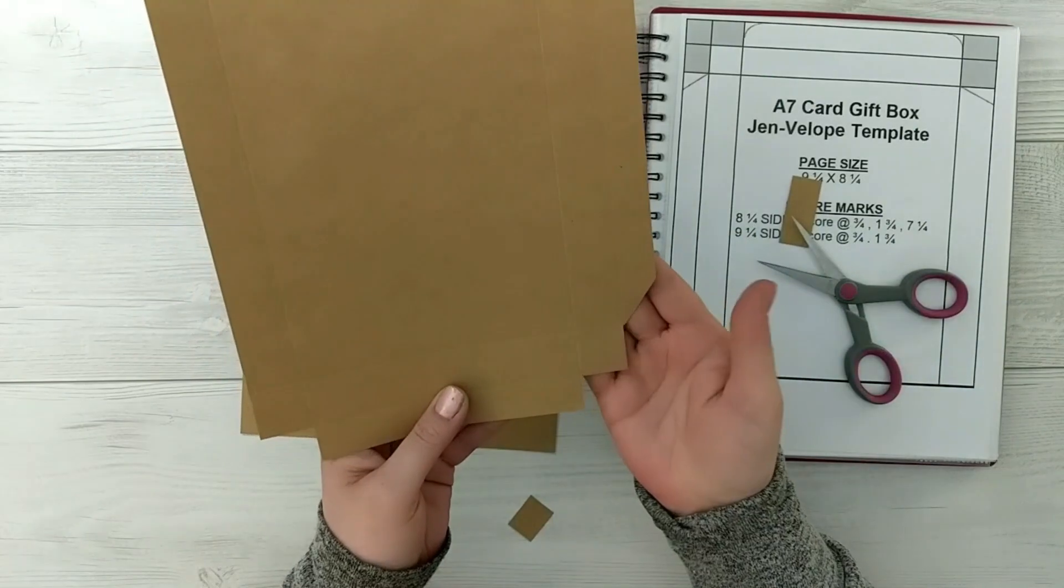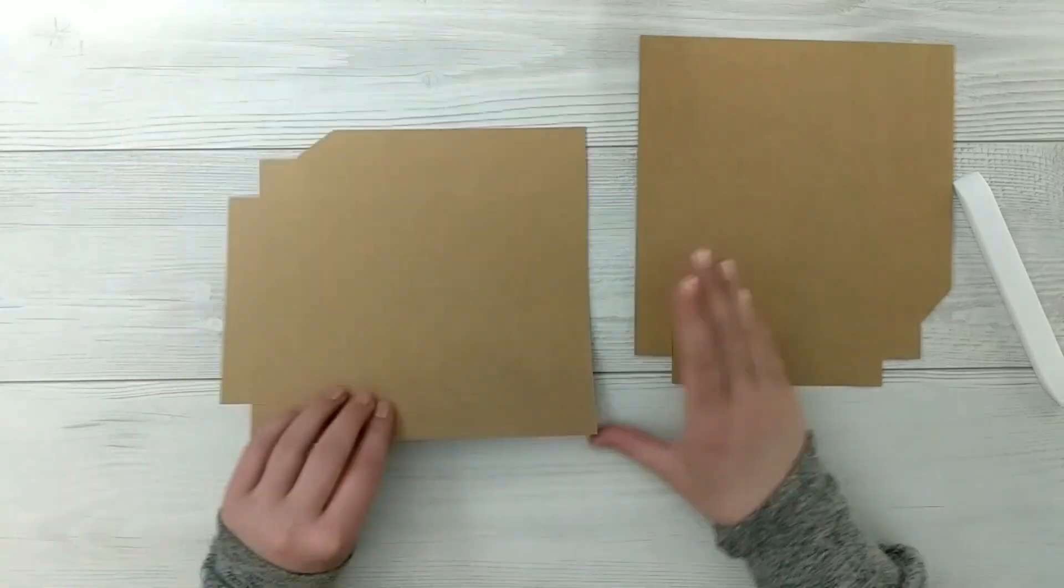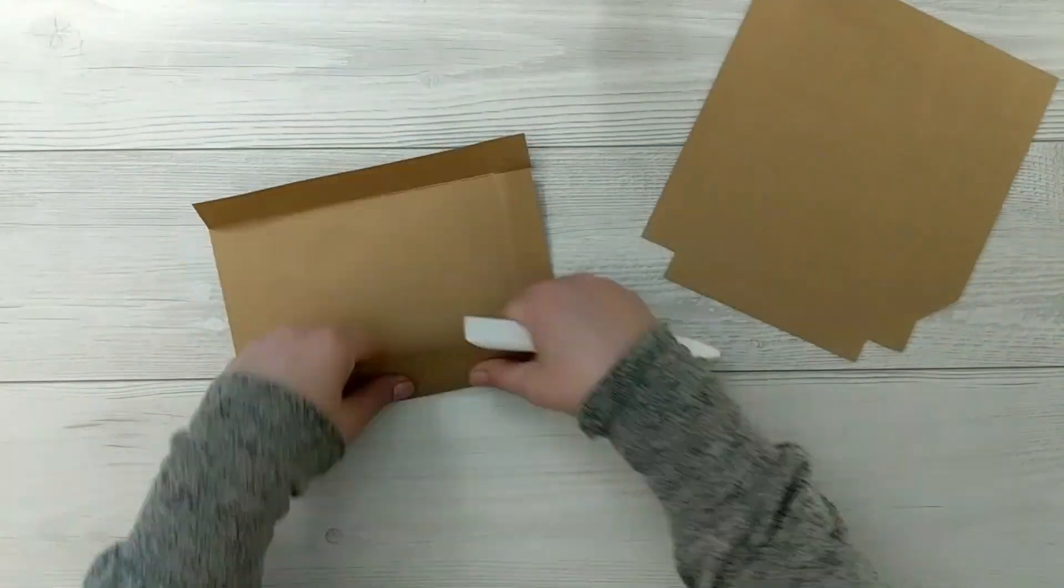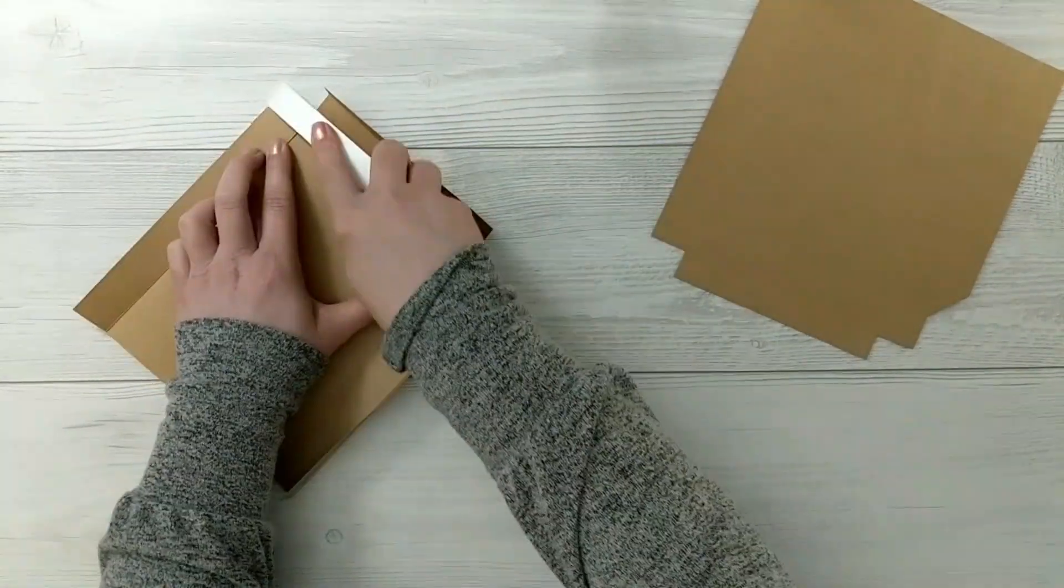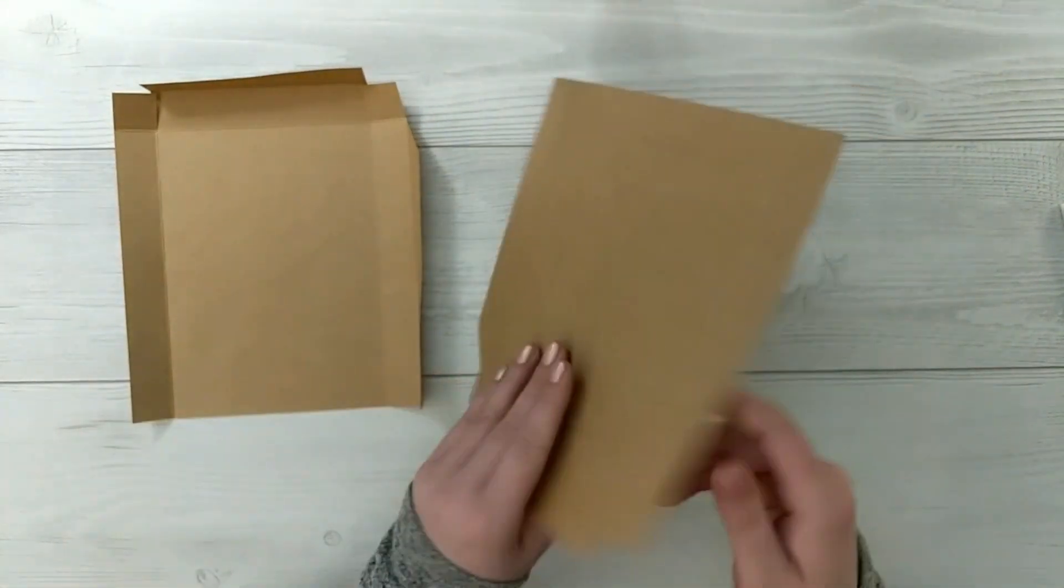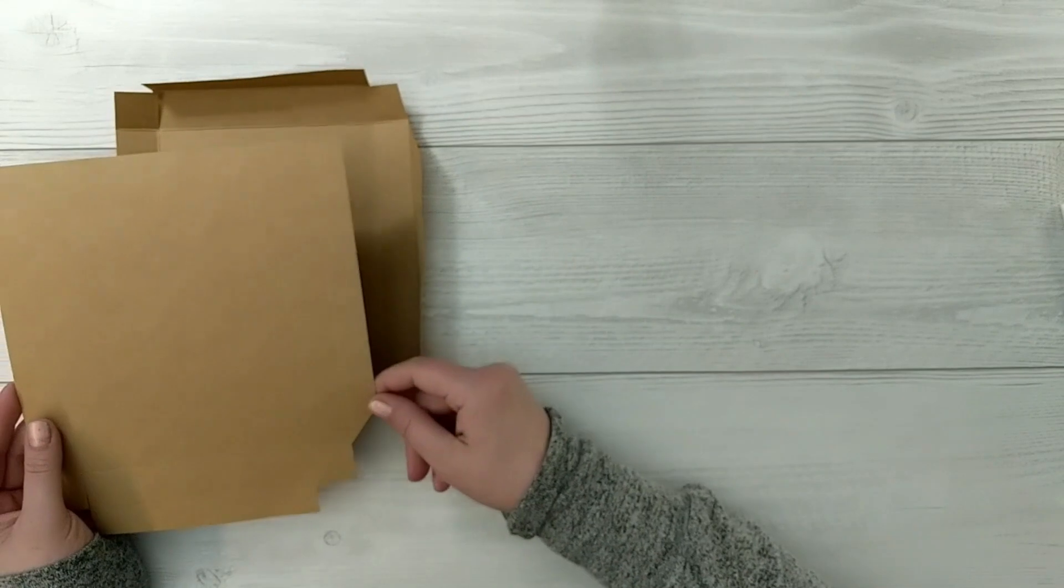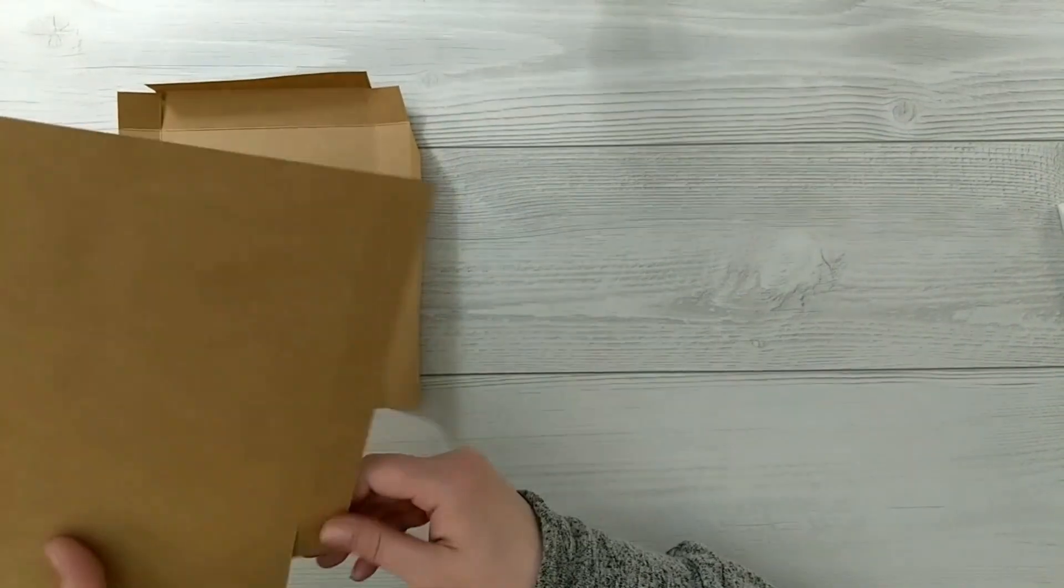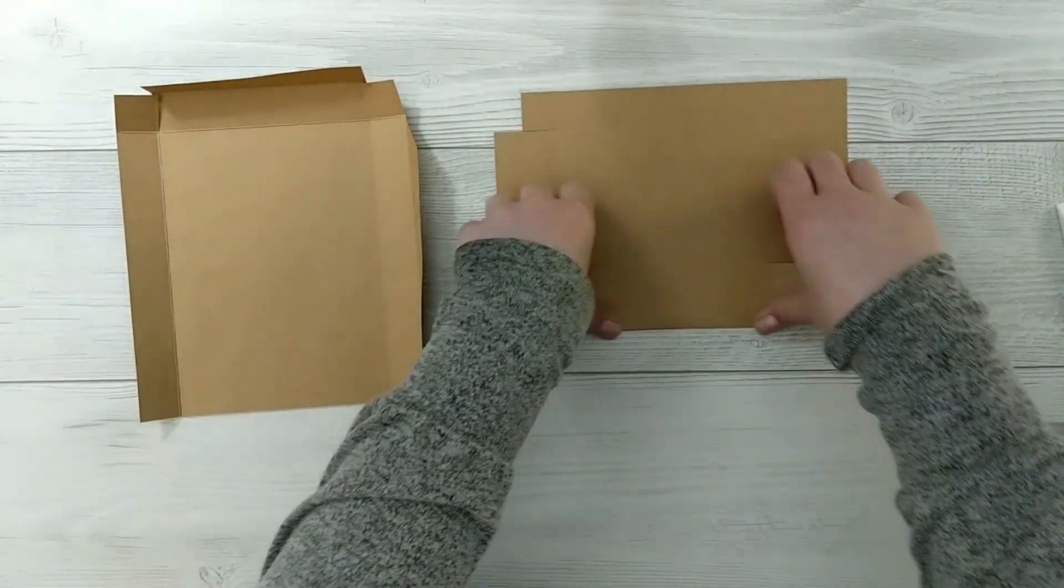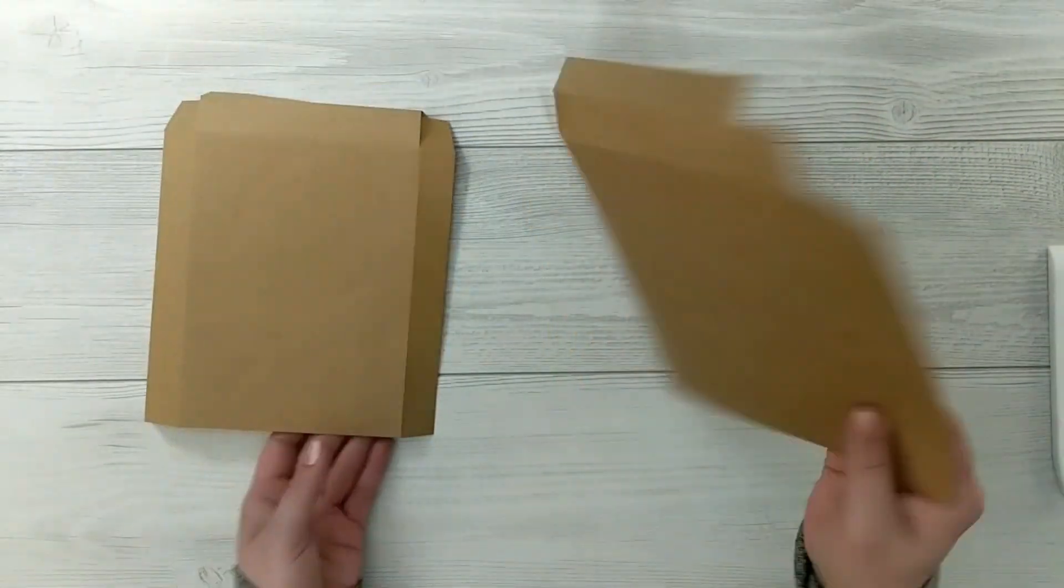And then you'll make one angle cut on the side that has those two score marks. We'll crease all of the score marks and do the same thing for the second panel. So you should have two pieces that look identical. When you want to score this piece, make sure that you're scoring the opposite way of the first one because they should sit on top of one another and then be able to fold into a box.